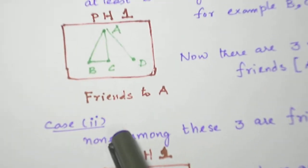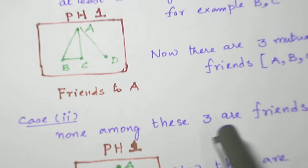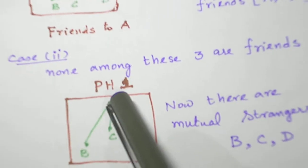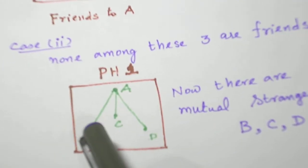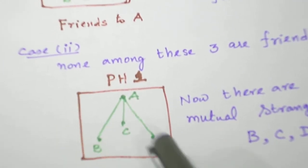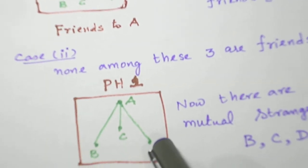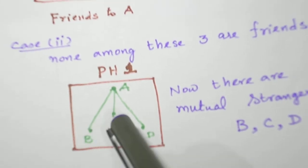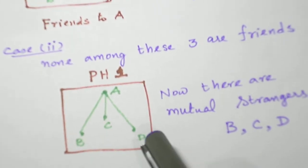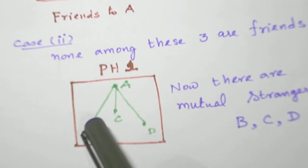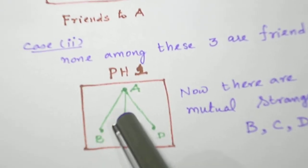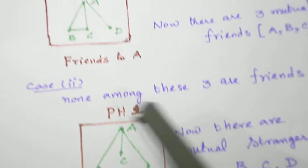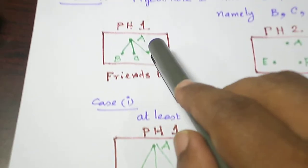And in the second case, none of them are friends. So if we take A is friend to B, A is friend to C, A is friend to D, but these 3 persons are not friends to each other. So we found 3 mutual strangers. B is not friend to C, B is not friend to D. Similarly, C is not friend to B, C is not friend to D. So we found 3 mutual strangers in case 2 of case A.